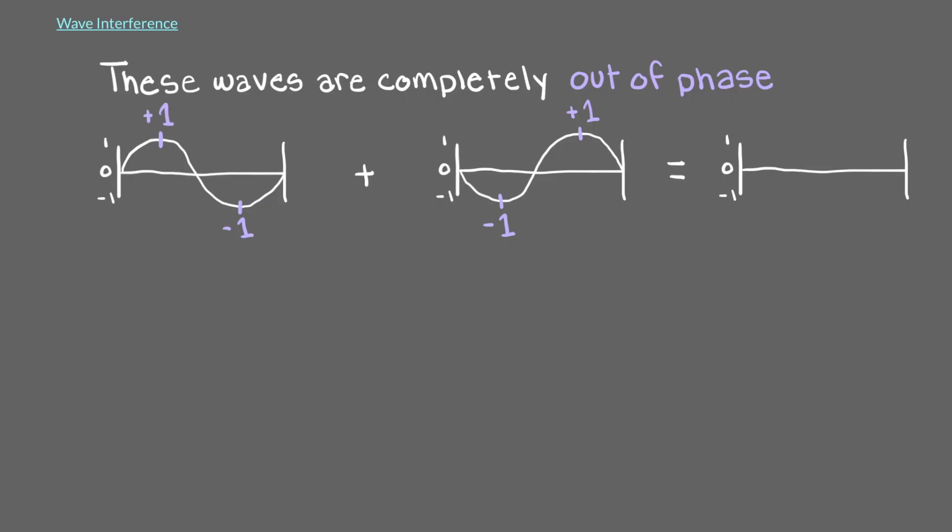For the first peak on each wave, 1 plus negative 1 equals 0. For the second peak, negative 1 plus 1 also equals 0. This is another example of destructive interference.